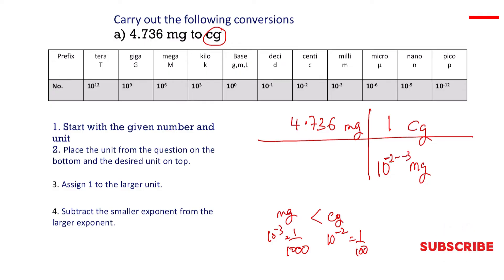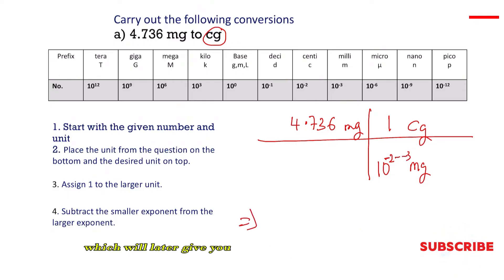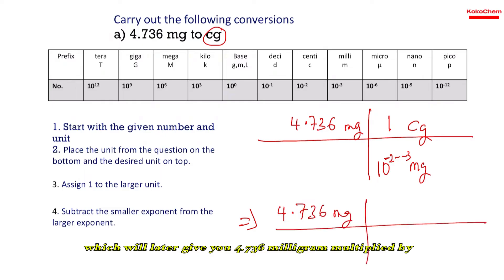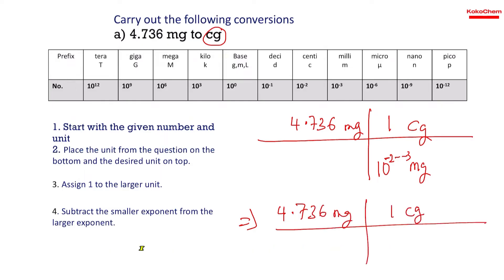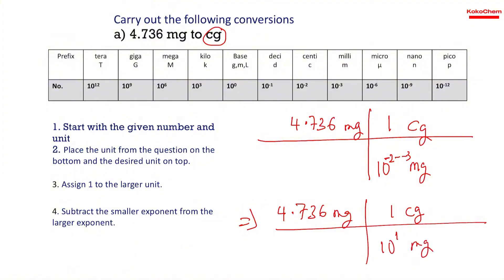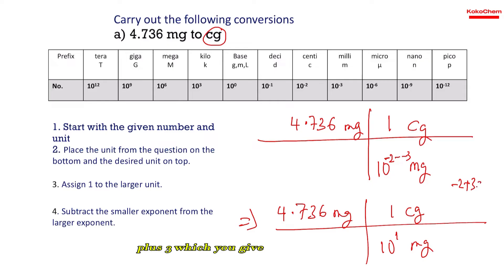This gives us 4.736 milligrams times 1 centigram over 10 to the power positive 1 milligram, because negative 2 minus negative 3 equals negative 2 plus 3, which gives you positive 1.